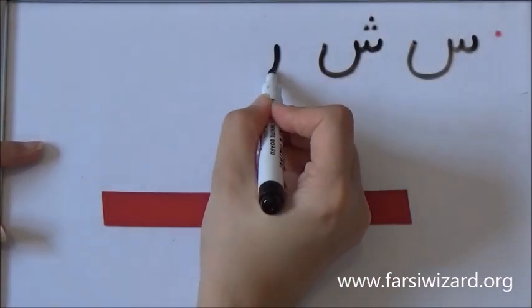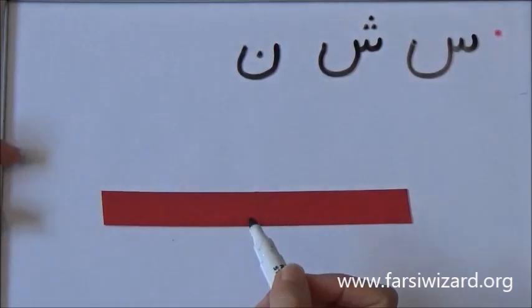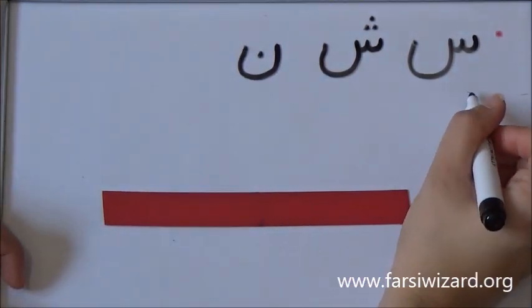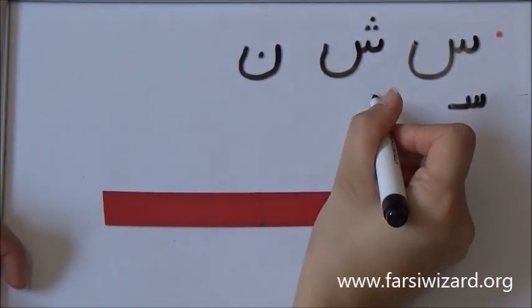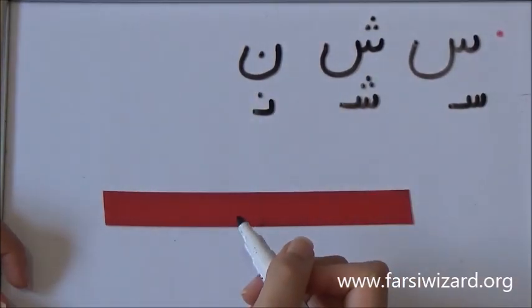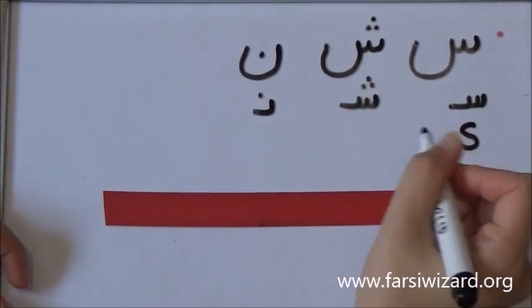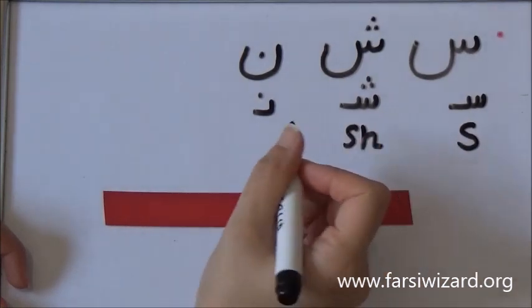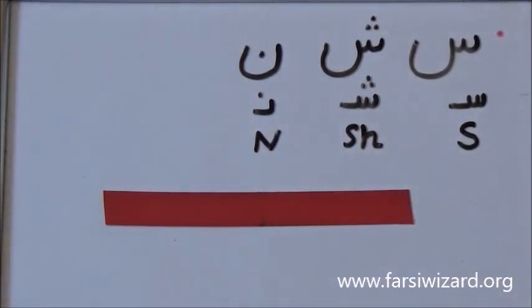So the first letter here as you can see has three little teeth, it's sin. The second one, same with three dots on top, shin, and the last one, nun. So as you can see these are the equivalents of s, sh, and n in English.